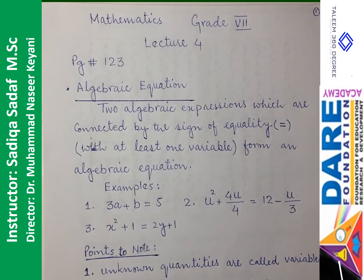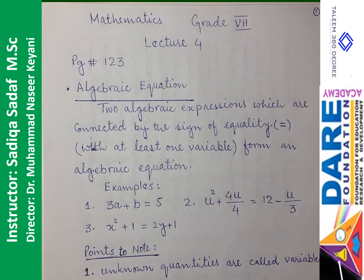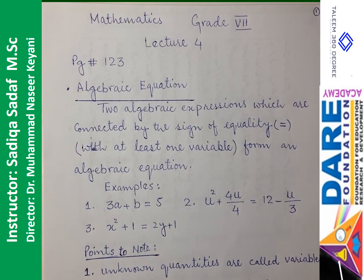Hum Algebraic Equation ko aise define karenge: two Algebraic Expressions which are connected by the sign of equality. Means, hamare paas koi si do Algebraic Expressions hon, un dono ko hum aapas mein equal sign ke zariye connect karein, with at least one variable. Agar woh dono Algebraic Expressions, jinmein ek variable kamse kam ho, aur unhe equal sign se connect karein, to jo equation banegi woh Algebraic Equation kahlayegi.